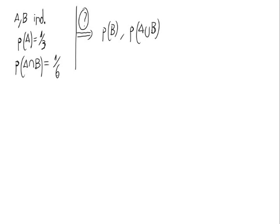We have two events A and B that are independent. We also have the probability of A, one third, and the probability of A intersection with B, one sixth.